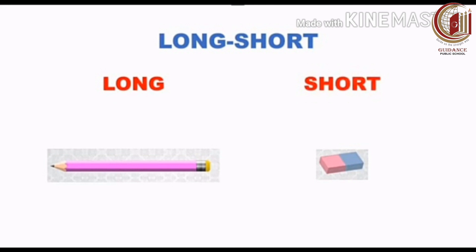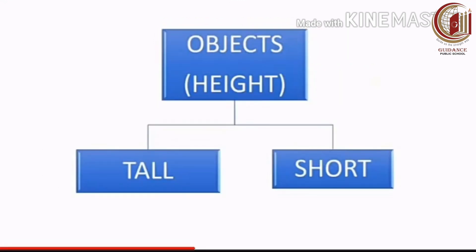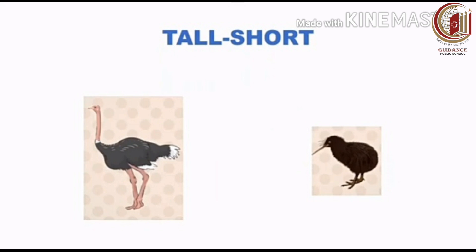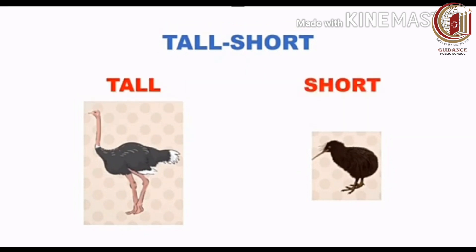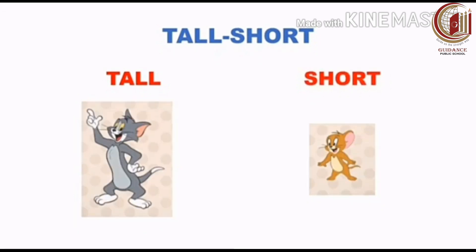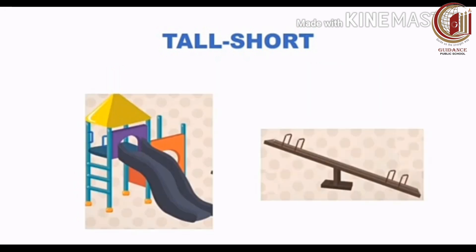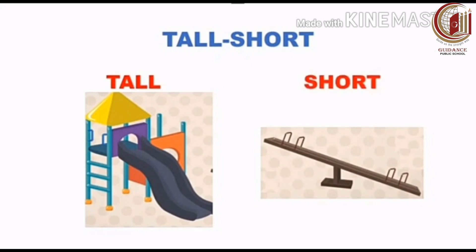Now we know how objects can be compared based on their lengths. Now we shall compare objects based on their heights. When we compare objects based on their heights, they can be classified as tall and short. Look at these birds — the ostrich is a tall bird but the kiwi is the short bird. This is a tall slide and this is a short seesaw.